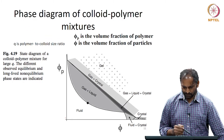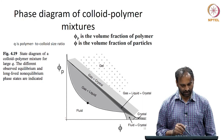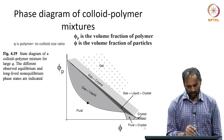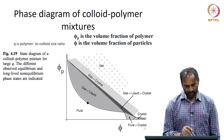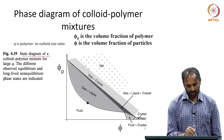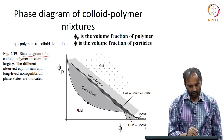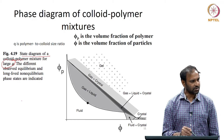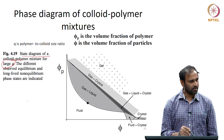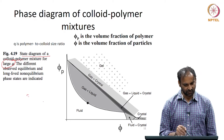These are two phase diagrams. This one is for the case where q is large — a state diagram for a colloid-polymer mixture for large q. Large q corresponds to the protein limit, meaning q (Rg/R) is larger than 1.